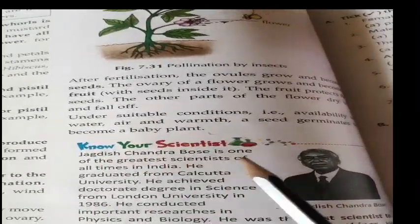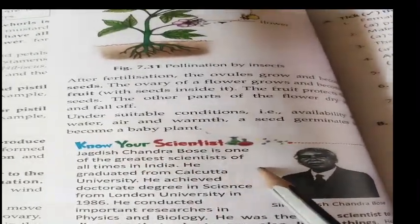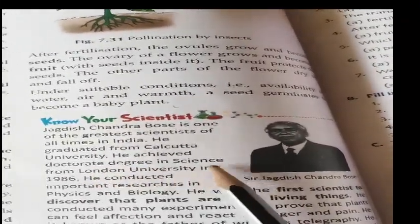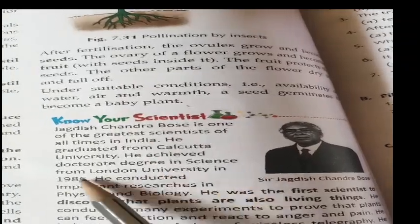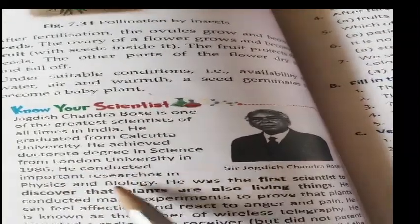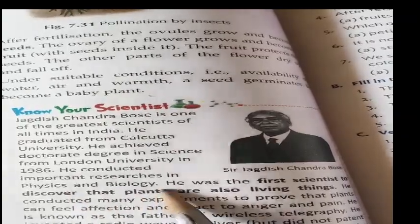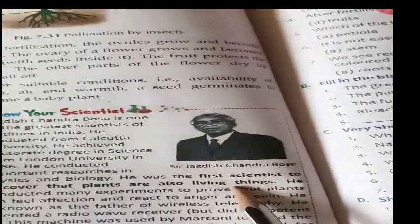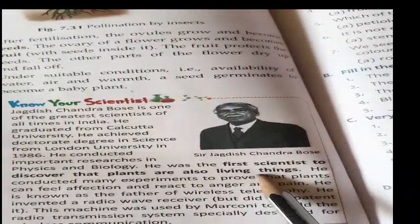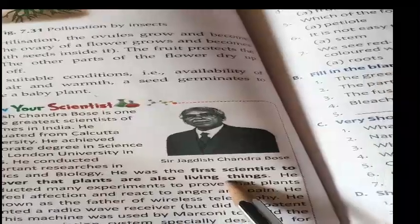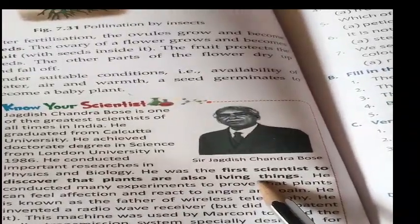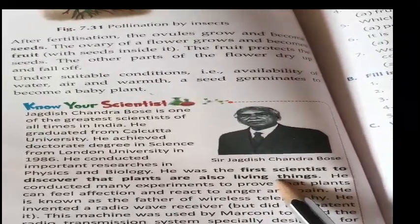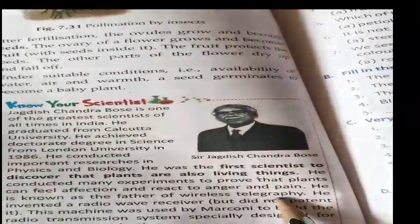Jagdish Chandra Bose is one of the greatest scientists of all time in India. He graduated from Kolkata University and achieved a doctorate degree in science from London University in 1896. He conducted important research in physics and biology. He was the first scientist to discover that plants are also living things.